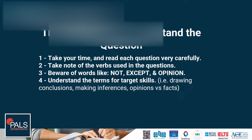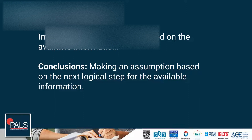Two of the trickier terms are inference and conclusion. An inference is basically assuming a fact based on all the available information — they don't tell us explicitly; they give us a bunch of information or a passage and we're supposed to analyze it and assume a fact based on that. A conclusion is very similar in process — we make an assumption based on all of that information and the next logical step beyond that.